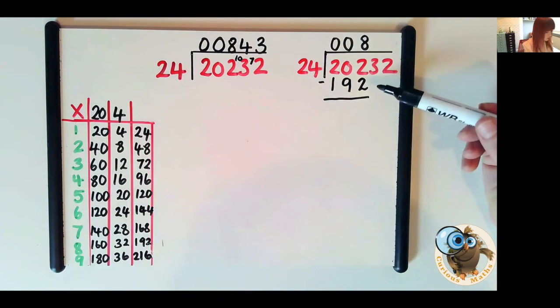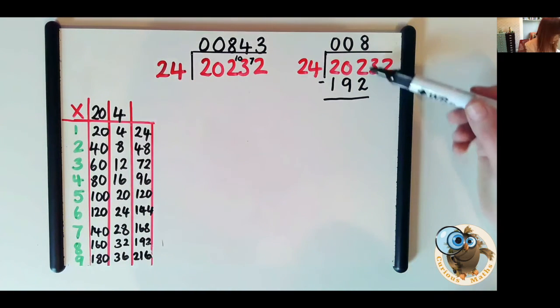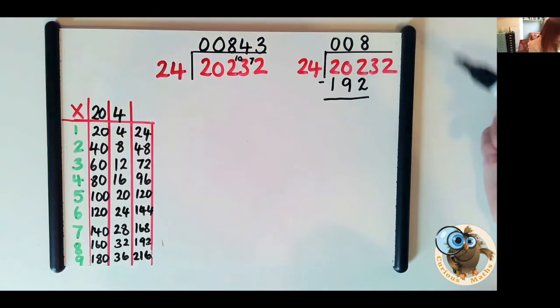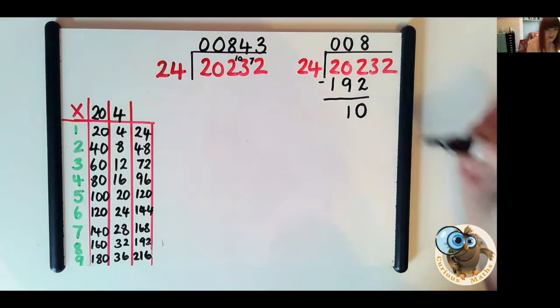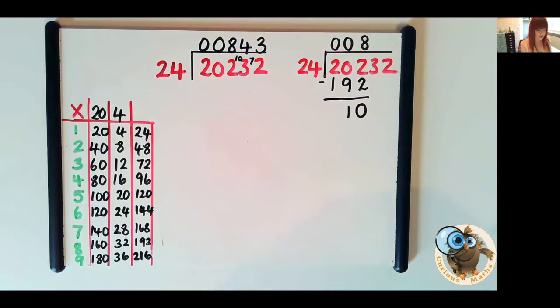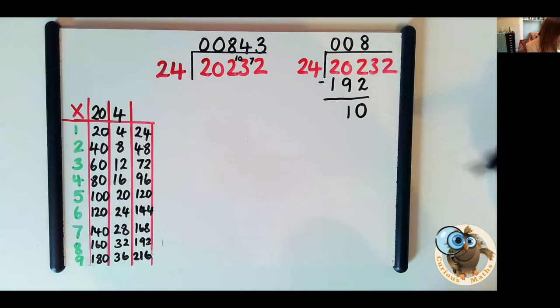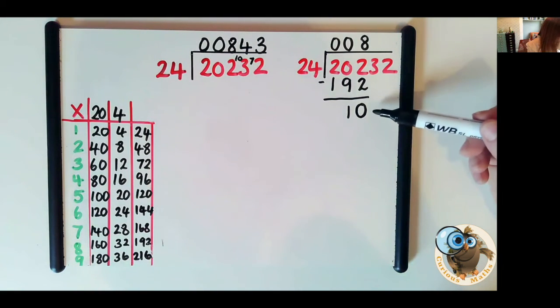Now I'd be looking for your child to go 192 plus 8 is 200 plus 2 more so therefore there must be 10 remaining. And if they can't do it in their heads they might like to do it as a column method. So we've got our 10 remaining.